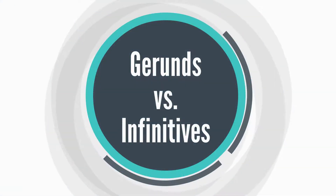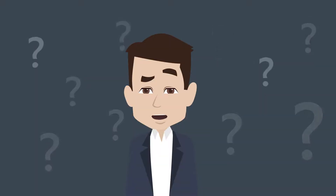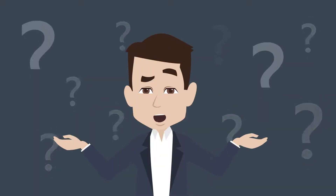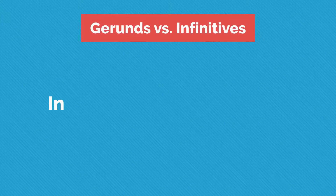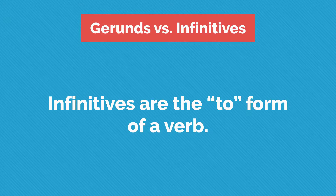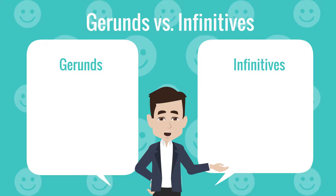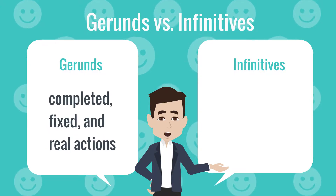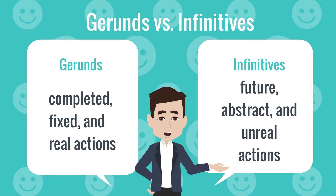Gerunds versus infinitives. It can be confusing to understand when to use gerunds versus infinitives. Infinitives are the TO form of a verb. The easiest way to remember the difference between the two is: gerunds are used with completed, fixed, and real actions, while infinitives are used with future, abstract, and unreal actions.